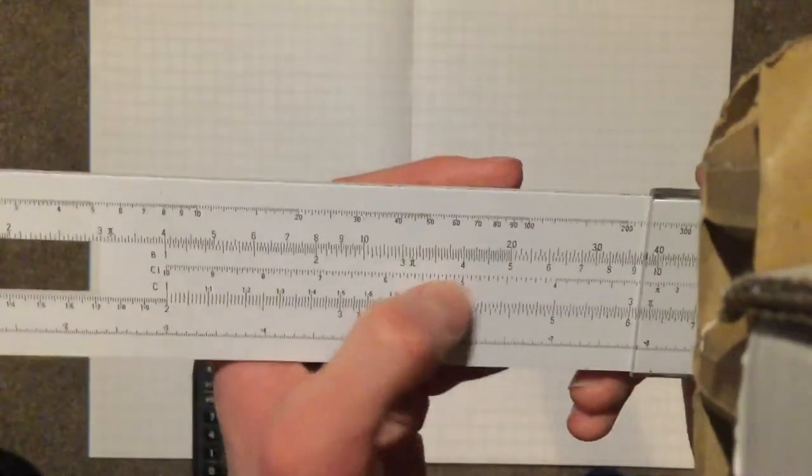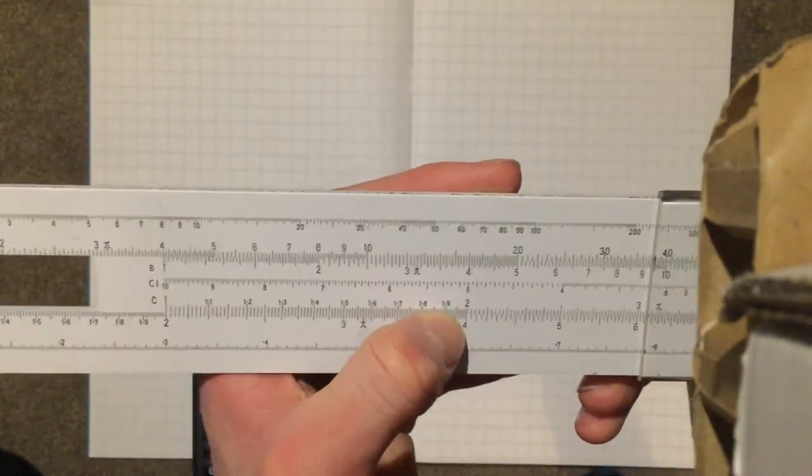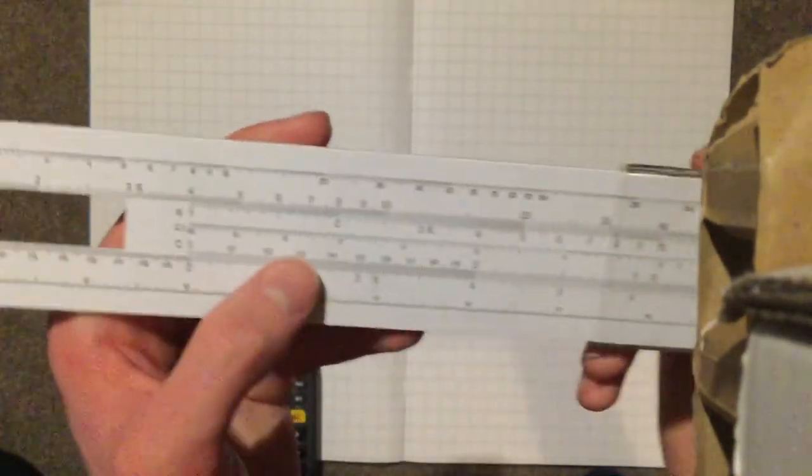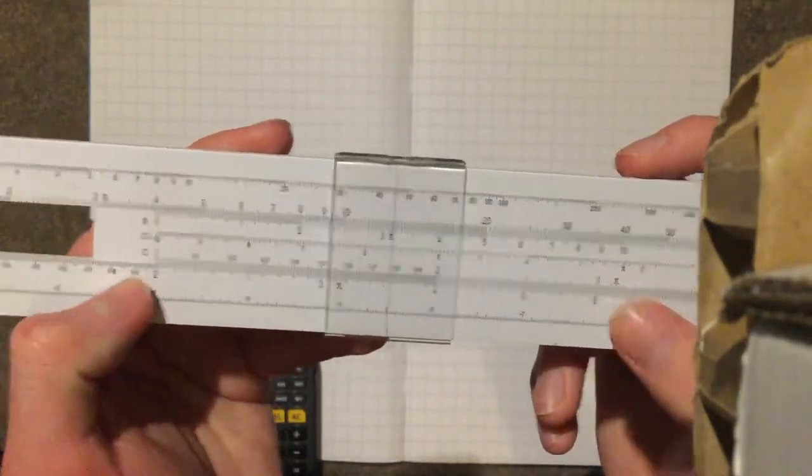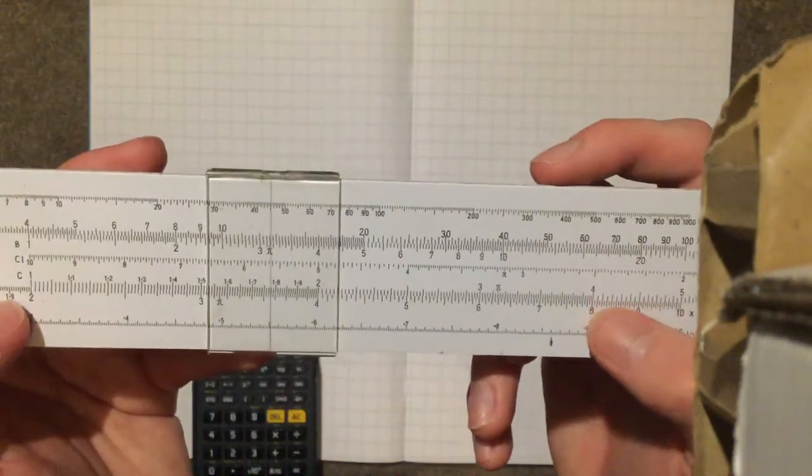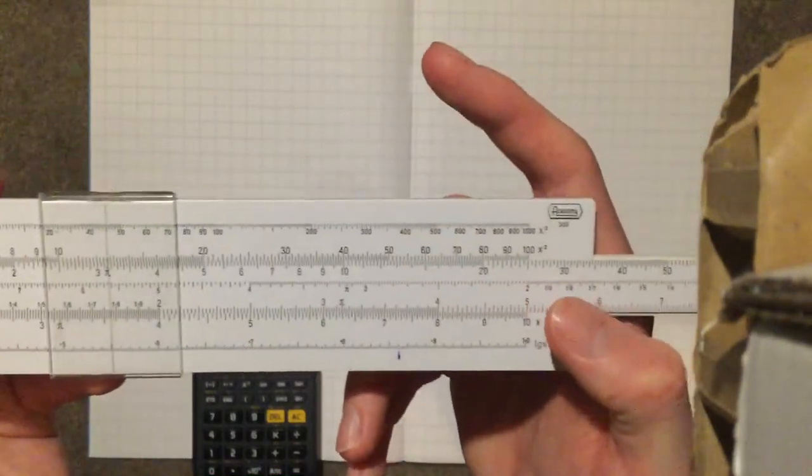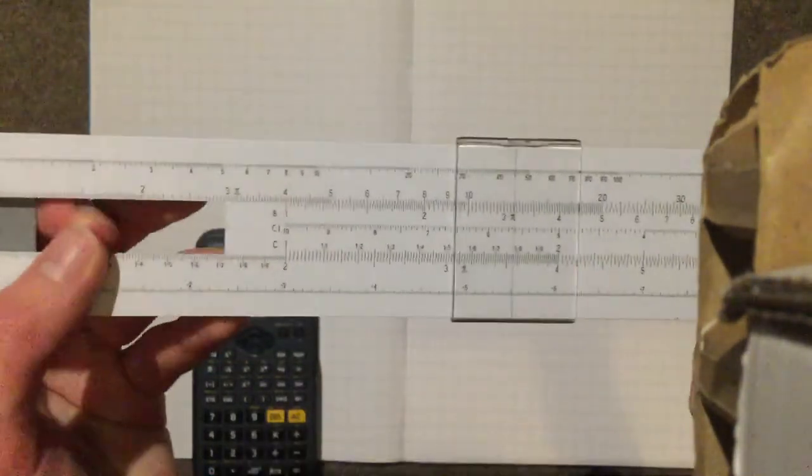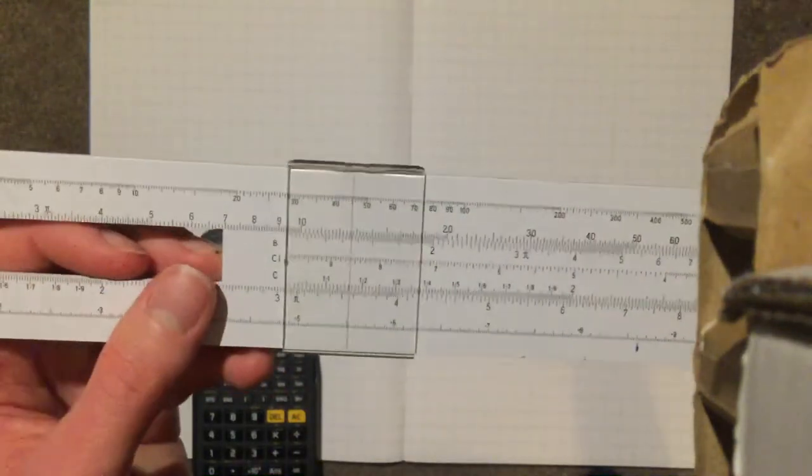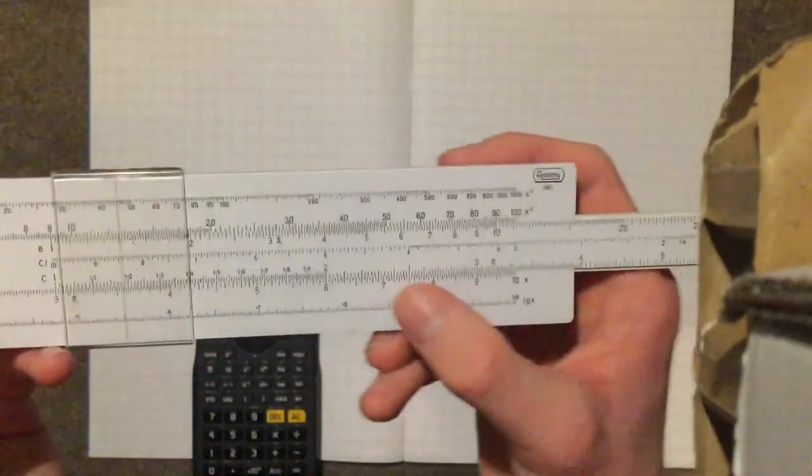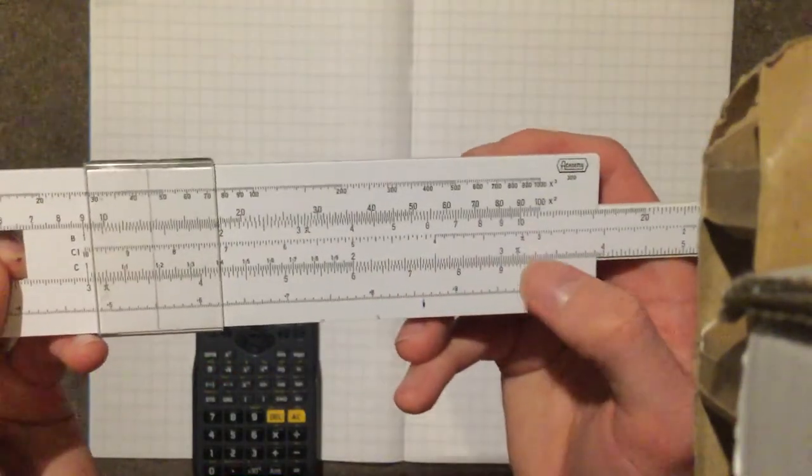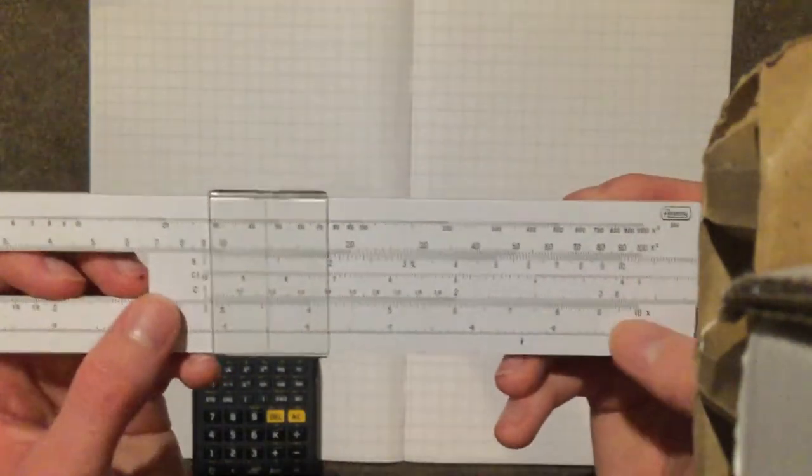So 2 times 2 is 4, 2 times 3 is 6, and 2 times 4 is 8, times 5 is 10. Let's have a look at 3, 3 times 2 is 6, times 3 is 9, 3 squared is 9.